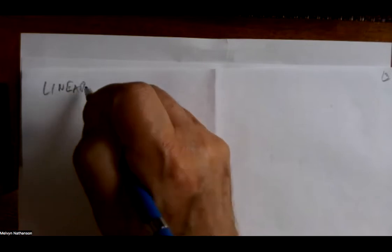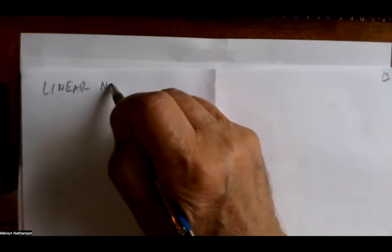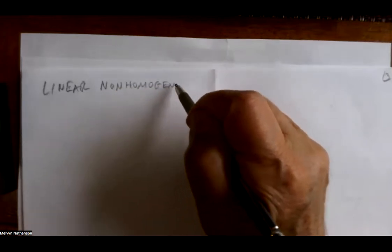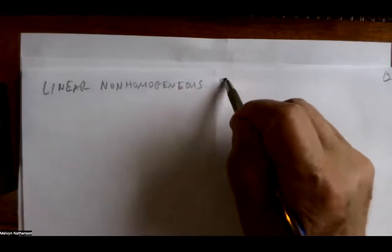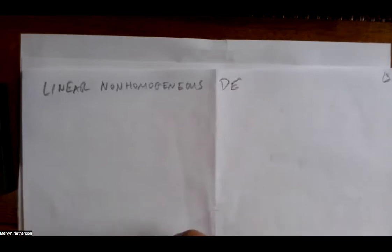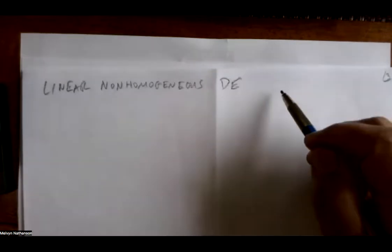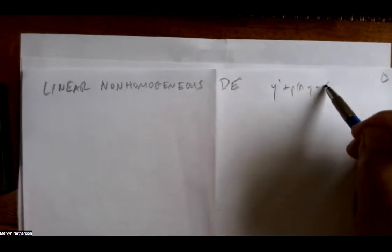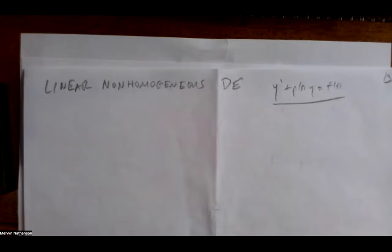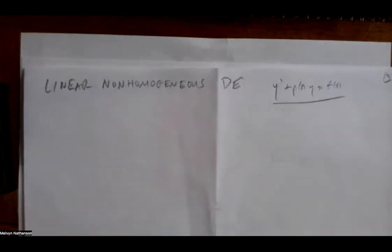Let's go to the general first-order non-homogeneous case. This is of the form y prime plus p(x) y equals f(x), where f(x) is not zero. There are many methods to obtain the general solution, and the very nice method used in our textbook is called the method of variation of parameters.